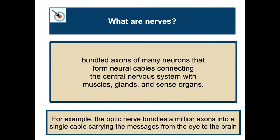What are nerves? We hear the term often — like 'you're getting on my nerves' — but technically, when thinking about the biological basis of behavior, nerves are bundled axons of many neurons that form neural cables connecting the central nervous system (CNS) with muscles, glands, and sense organs. For example, the optic nerve in your eye bundles a million axons into a single cable carrying messages from the eye to the brain.